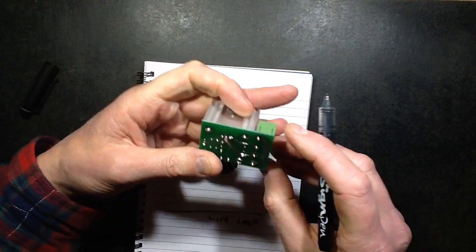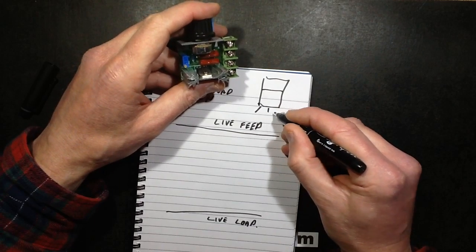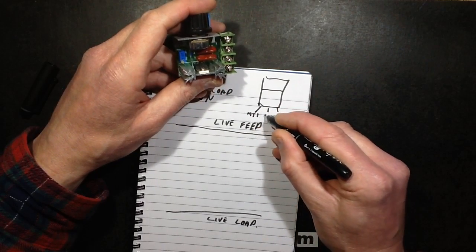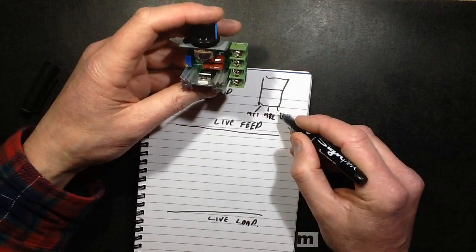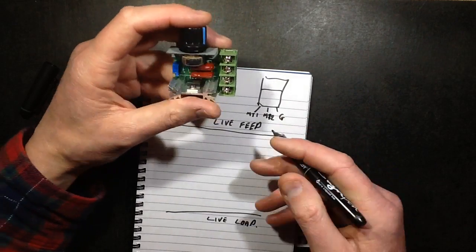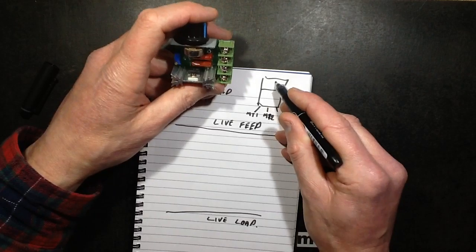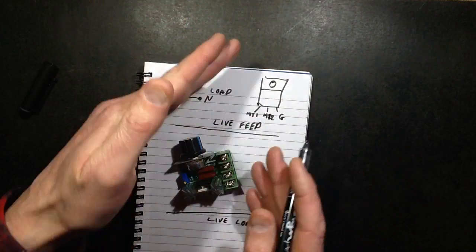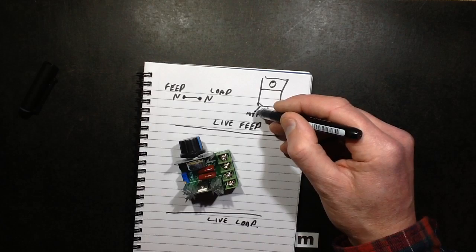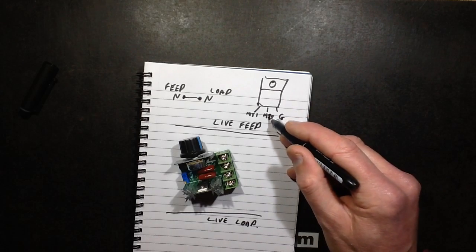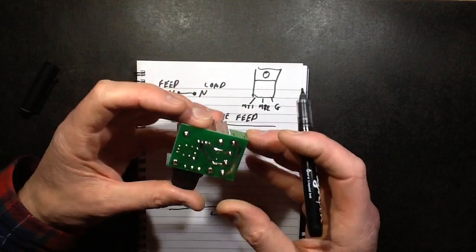Now looking at triacs, when you look at them with the tab facing the heatsink, the terminals are normally in the order of MT1, MT2, and gate. Usually the gate is actually referenced to MT1. If you can imagine it's almost like a transistor that as soon as you raise a certain voltage above MT1 it will turn on. But the bizarre thing about triacs is that because they're AC components they can switch either polarity between MT1 and MT2. The gate can be either positive with respect to MT1 or it can be negative with respect to MT1. So normally the load is connected to MT2 and the control for the gate is normally derived from there.